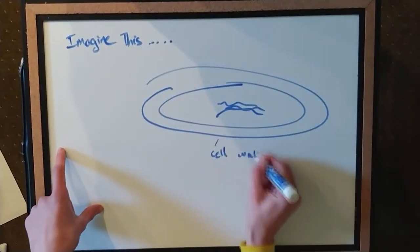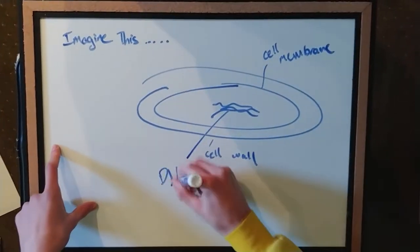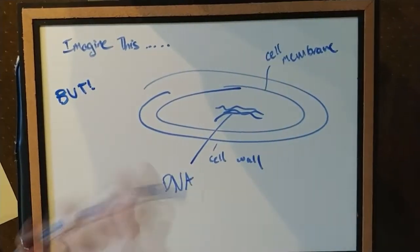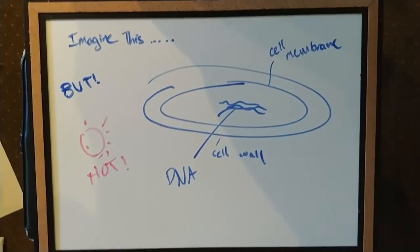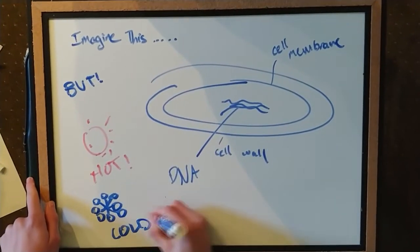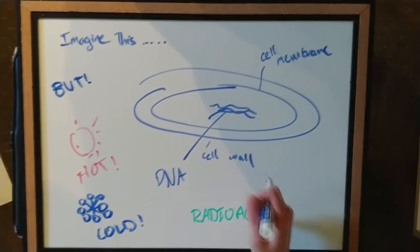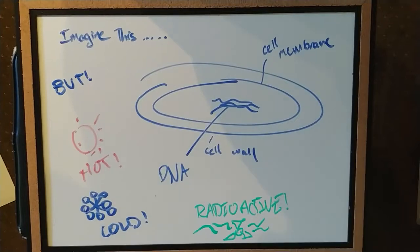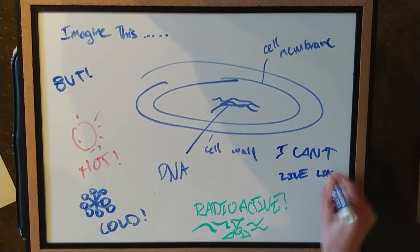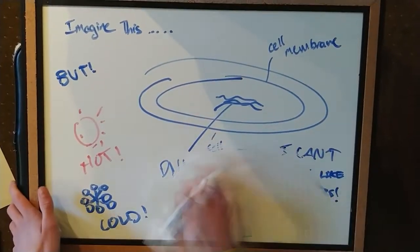Imagine this. A unicellular organism with a cell wall is in an environment that is unfavorable. For example, it may be too hot, or too cold, or maybe it's even radioactive. The organism knows that it cannot survive like this, so what is there to do?